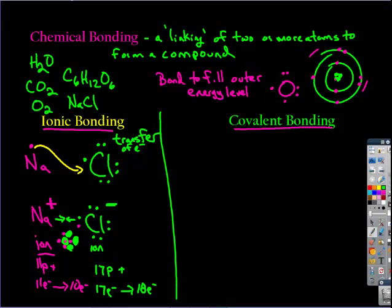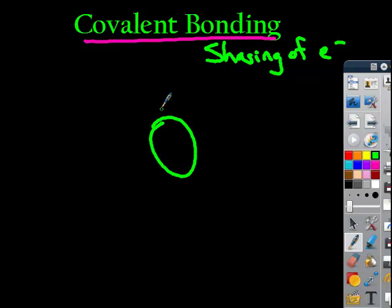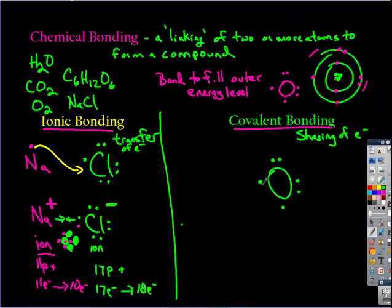On the other side of the fence here, we have covalent bonding. And covalent bonding doesn't involve a transfer. But instead sharing of electrons. And I'm going to pull my oxygen down here. Oxygen is a very good example. Oxygen has six outermost energy level electrons. Sometimes they're referred to as valence electrons. And so it needs to become stable.